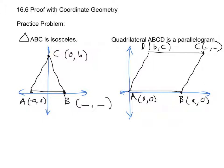Now we're going to do some practice problems with coordinate geometry, finding missing coordinates without adding any new letters. We're given that triangle ABC is isosceles, with point A at (−a, 0) and point C at (0, b). We need to find the coordinates of point B. Since this is an isosceles triangle, certain distances are going to be equal, and we can see that B is going to be on the x-axis, so the y-value is going to be 0.